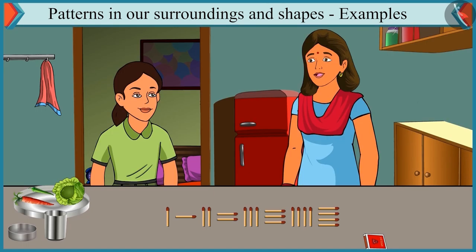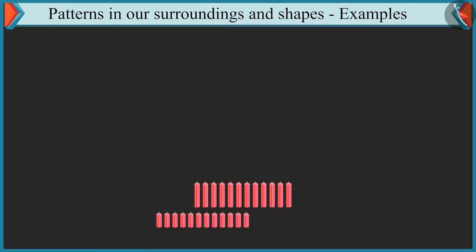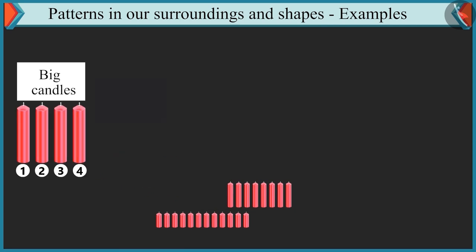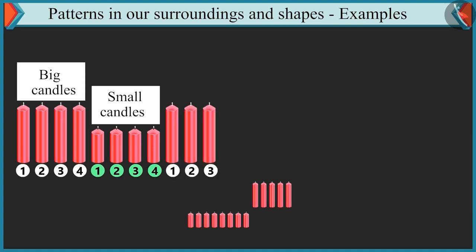Well done, Chutki. You completed this pattern in a perfect manner. Come on, now let's look at the next pattern. Now I will make a pattern with these candles. You have to complete it. Okay. Four big candles, four small candles near them. Then again three big candles and three small candles.